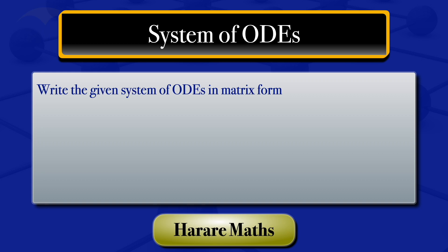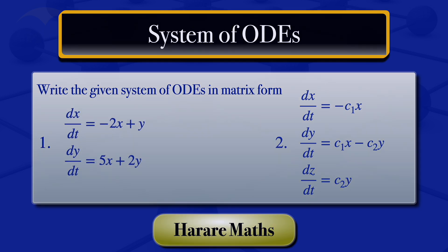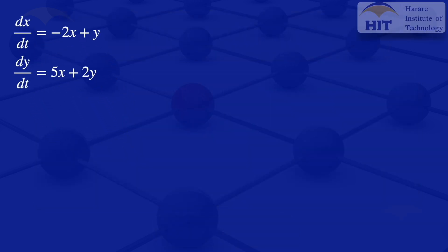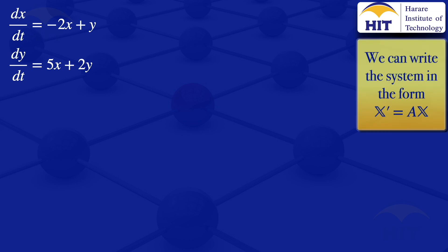In this video, I'm going to write these two systems of ODEs in matrix form. We can write a system in the form X prime equals A multiplied by X.